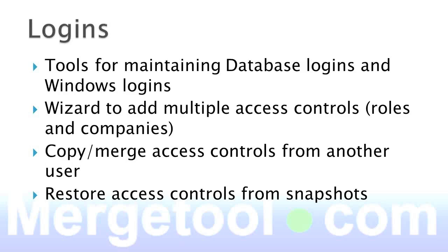When you have many combinations of roles and companies, there's a wizard where you simply select all the roles and all the companies, and at the end it comes up with a status saying there are 16 roles you want to add, three of them already exist — do you want to add the 13? You click OK and all those roles are added.